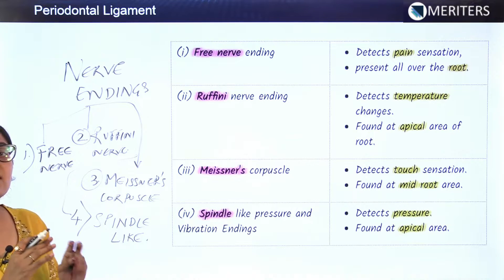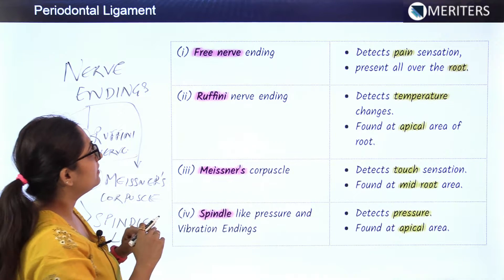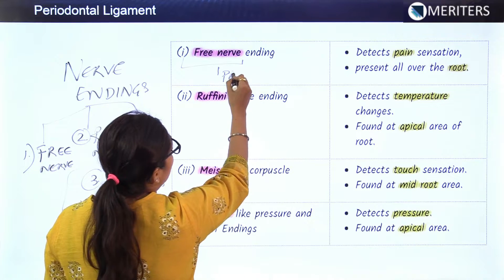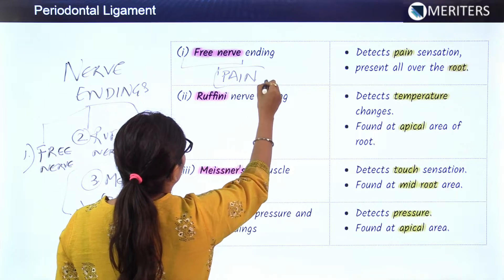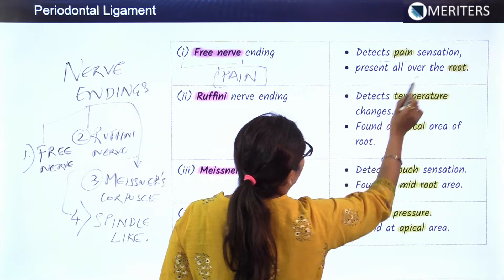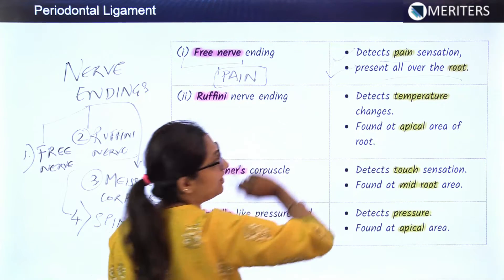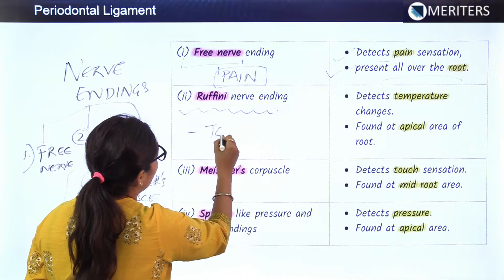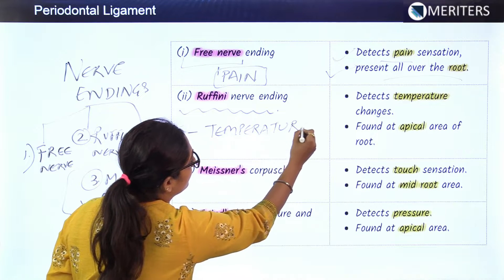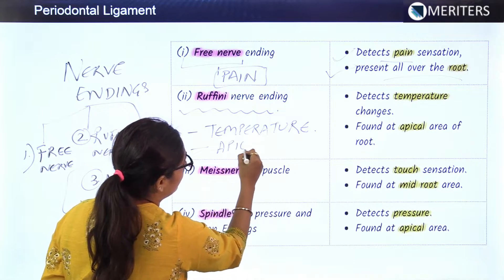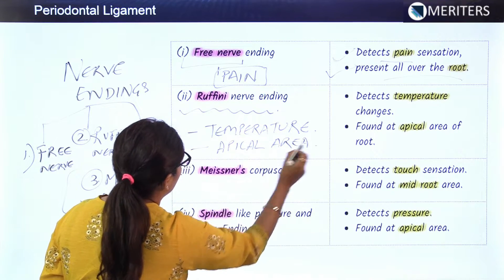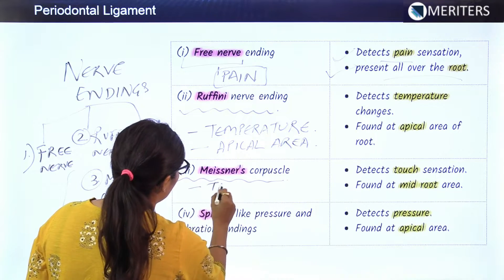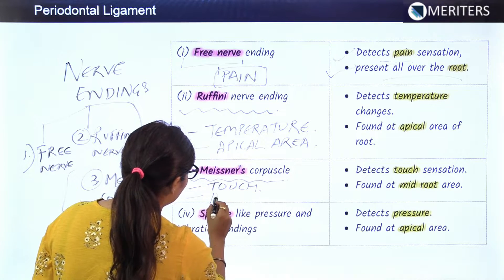The free nerve ending is the most discussed nerve ending related to pain - it detects pain sensation and is present all over the root. The Ruffini nerve endings deal with temperature sensation and are found at the apical area. Meissner's corpuscles detect touch sensation and are found at the mid-root area.